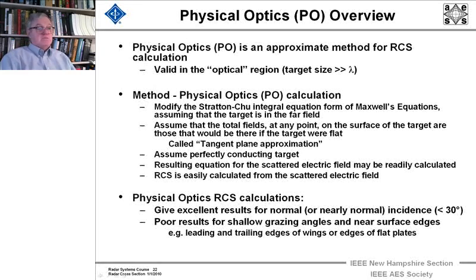It's called the tangent plane approximation. We assume that we're perfectly conducting target. And then the resulting equation for the scattered electric field can be readily calculated because we're going to be able to get with this tangent plane approximation the currents quite readily. And the RCS is easily calculated from the scattered field. Physical optics gives great results if you're at normal or near normal incidence, let's say less than 30 degrees. It gives poor results at grazing angles and near the edges. That's where diffraction comes into play, and also the leading and trailing edges of wings or edges of flat plates.